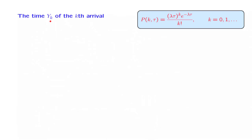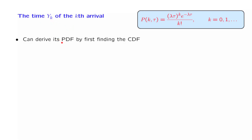In order to find the PDF of Y_k, we will make use of the Poisson PMF that we have already derived for the number of arrivals during an interval of fixed length. One approach is the usual program: we first find the CDF, and then differentiate to find the PDF. The CDF is the probability that Y_k is less than or equal to some number y.